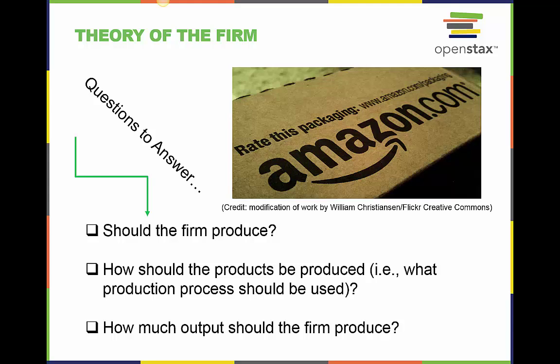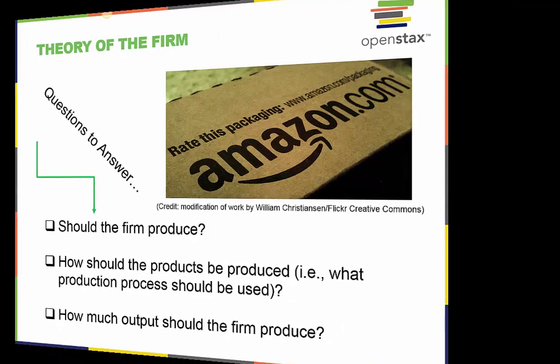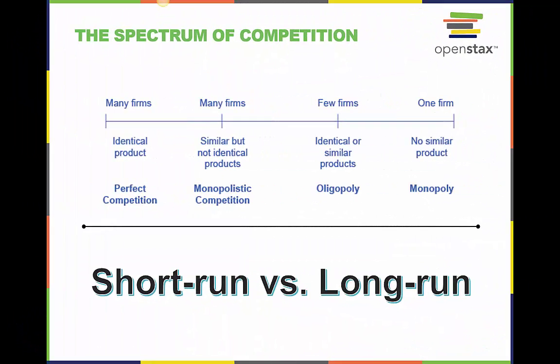The second question we will address is: how should the products be produced, or what production process should be used? Finally, we will address how much output the firm should produce. Firms produce goods and services in many kinds of markets.